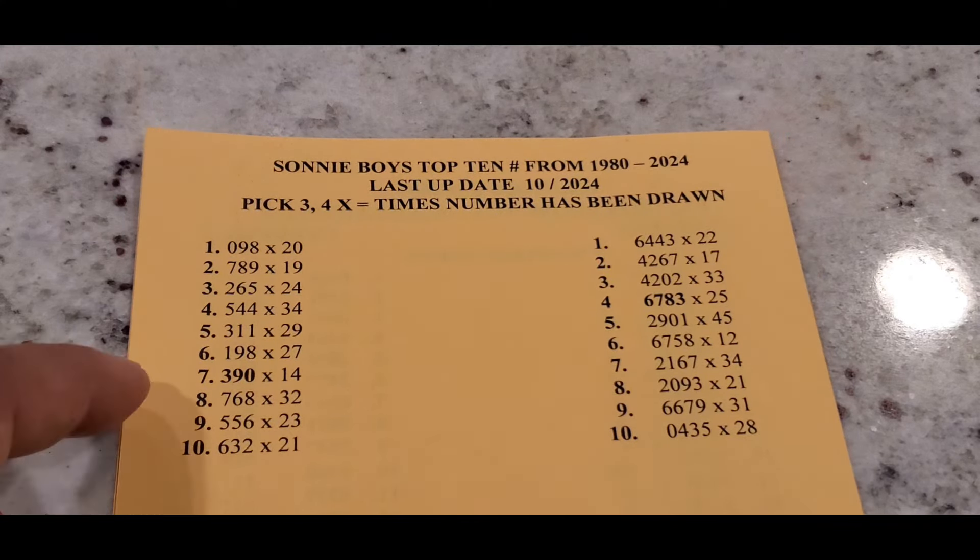What I would do is just play a couple combinations around the same numbers, like 6783. Then I would play 6443. Then for the one that failed 34 times, you can do 2167 and try to pair it with like maybe 4267, so you have a nice balance just in case some other numbers fall.